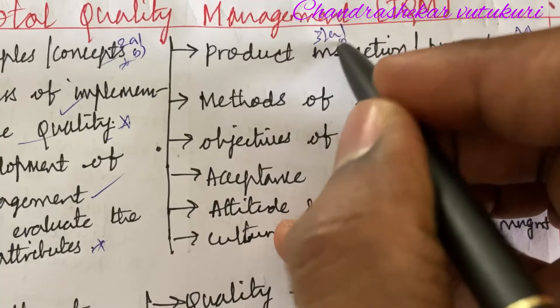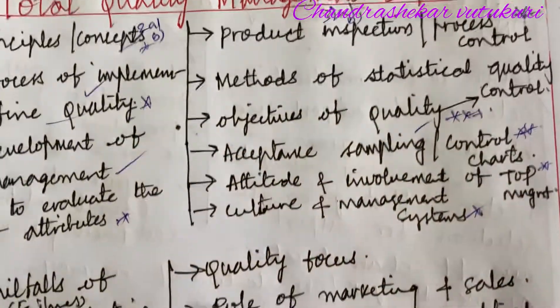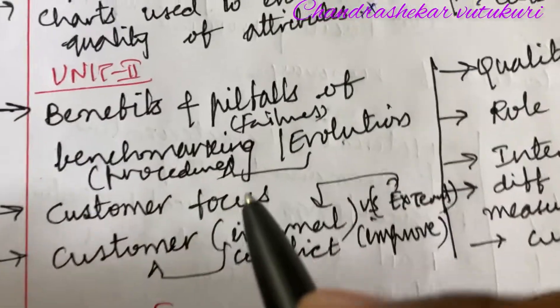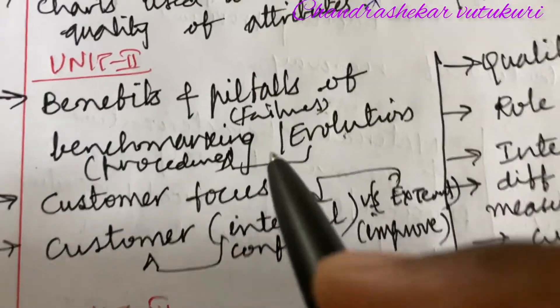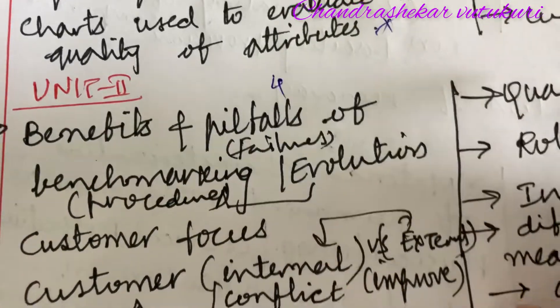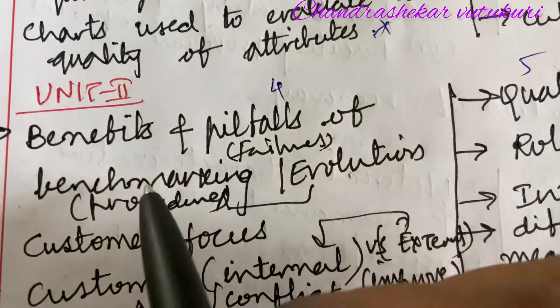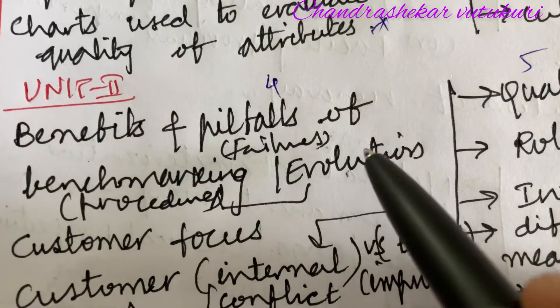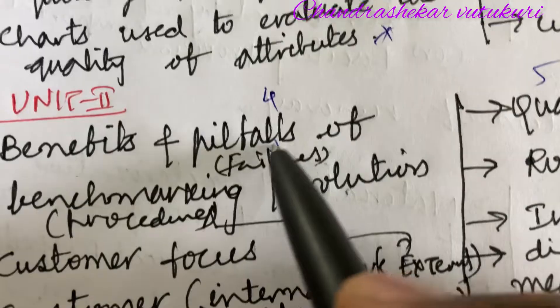Attitude and involvement of top management — explain the term — and the culture and management system, this is said to be 3A as well as 3B. Students, please do concentrate on your handwriting as it is a theory subject.